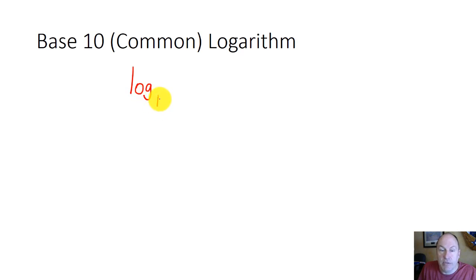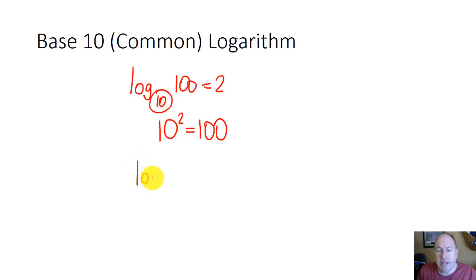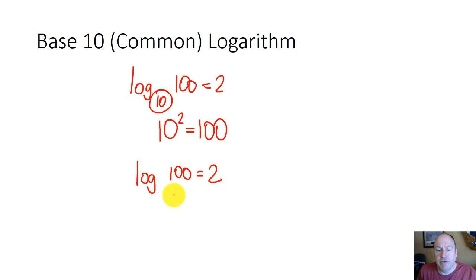First let's define what a base-10 logarithm is. If we have the log base 10 of 100, that's going to equal 2, because in exponential form 10 to the second power is equal to 100. We actually write common logarithms with no base at all — if there's no base listed, it is a base of 10. So we would say the log of 100 equals 2; it's implied that the base is 10 if it's not written.